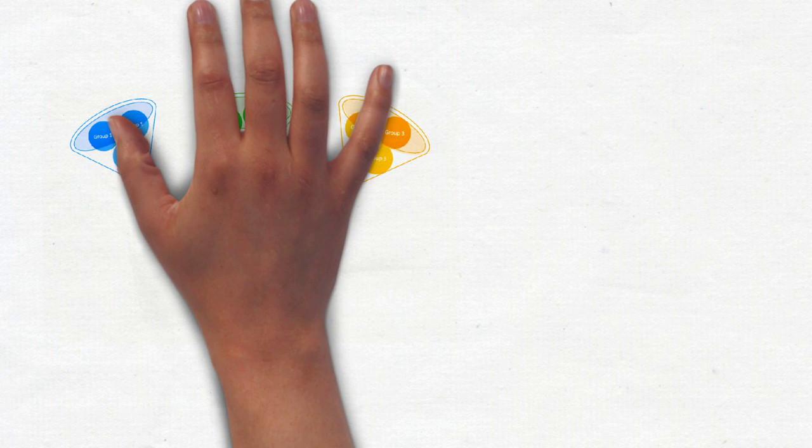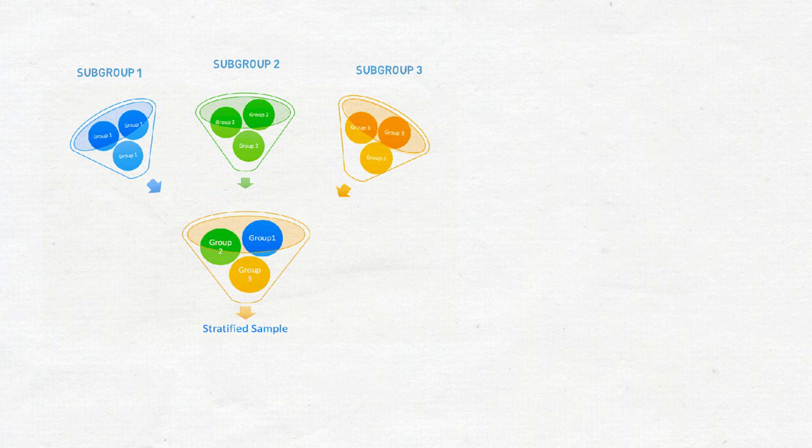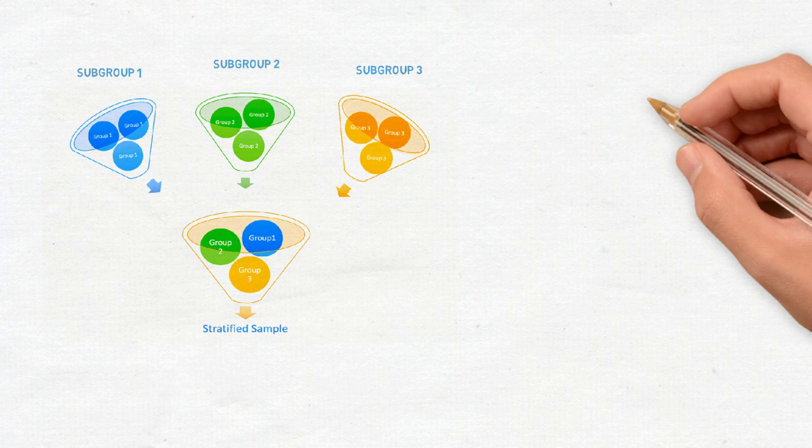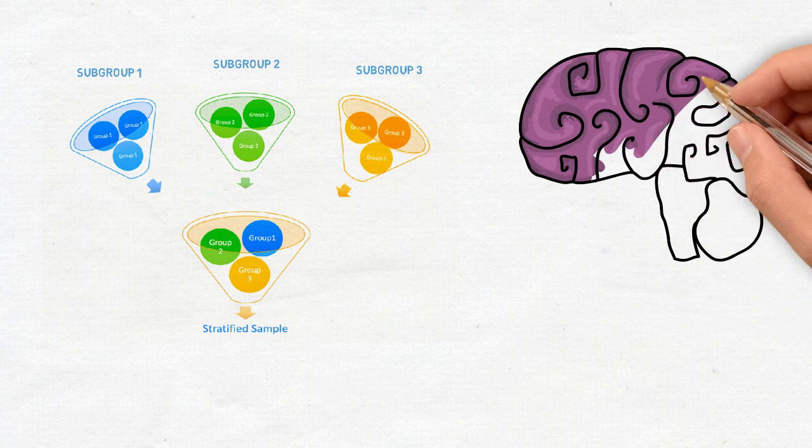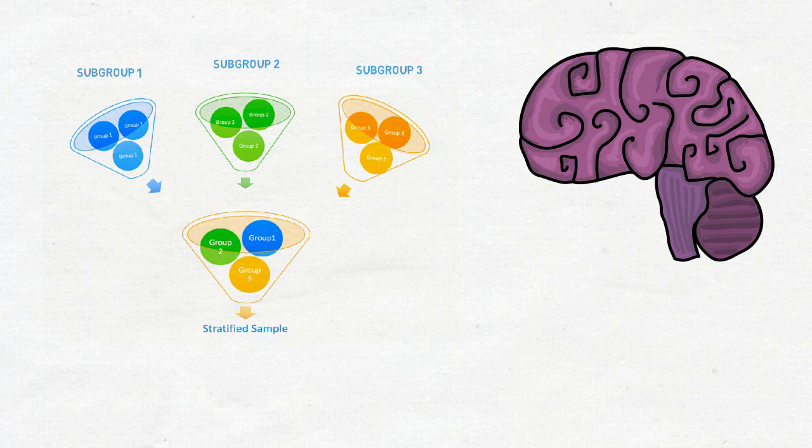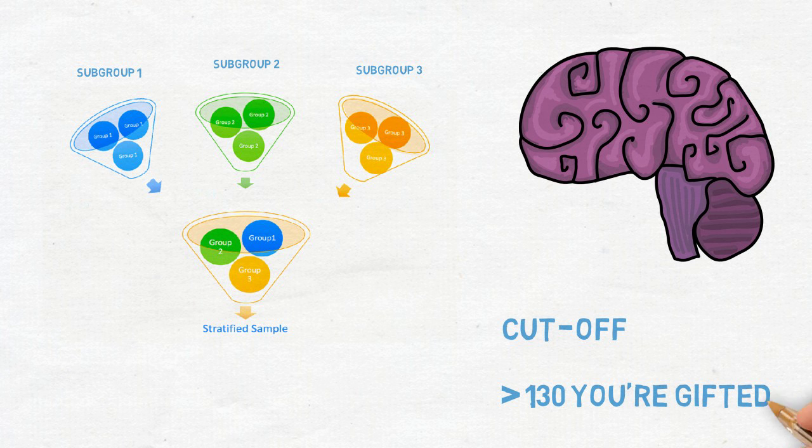You can also exert methodological control by stratifying your sample by, for example, age or sex, and then running analyses on these subgroups. However, this requires a large sample size, and it is not often done in practice. You can also use cut-offs for inclusion or exclusion. For example, if you are interested in studying giftedness, you could decide to only take a sample of participants with an IQ of over 130.